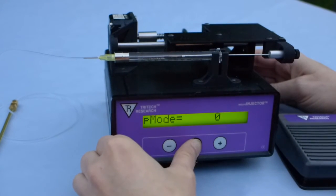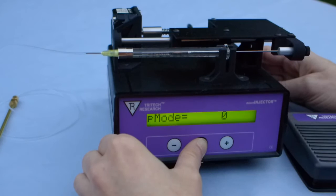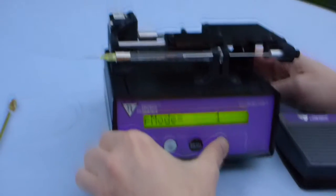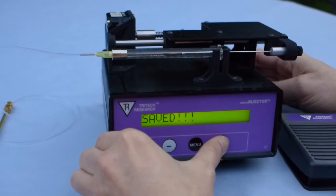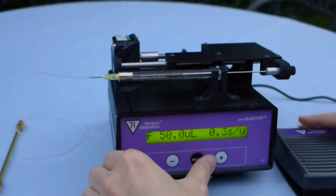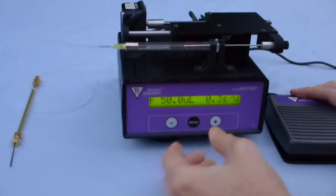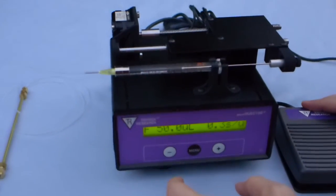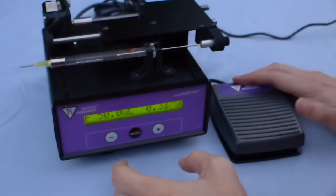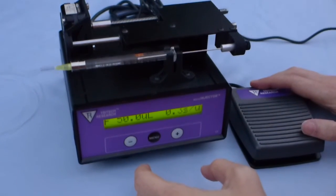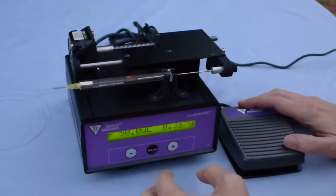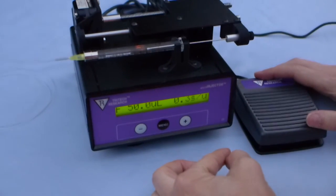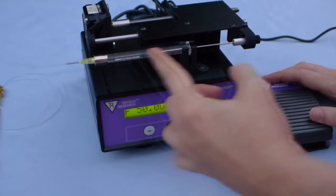P-Mode is something brand new. This lets you use this as a pressure type injector instead of just a positive displacement injector. So what you can do is you can set P-Mode to 1, and now the behavior of the device is going to change. So normally when you hit the foot pedal, it'll just go in the direction that it's supposed to go in based on forward or reverse, and then it'll stop, and that's the end of it. And you don't have to hold down the foot pedal. You just click the foot pedal, and it'll do what it's supposed to. In P-Mode, which is pressurization mode, it'll move forward the volume that's set, and then while you're holding down the foot pedal, it will stop. Then when you release the foot pedal, it will return back to its original position.